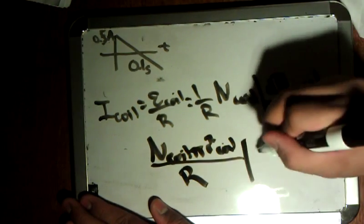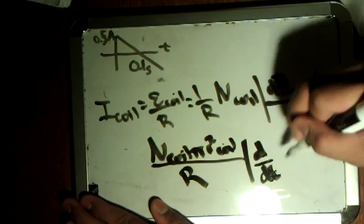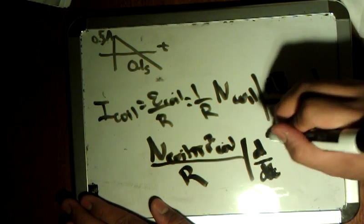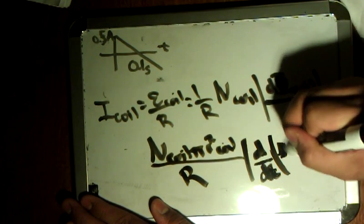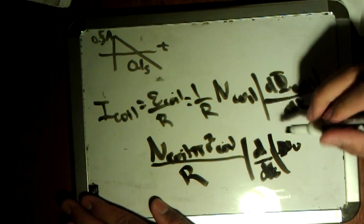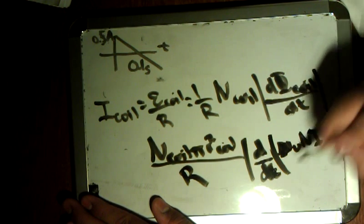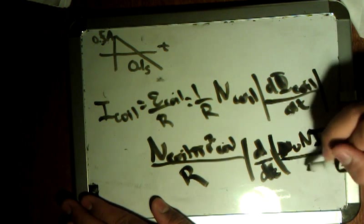And we have, in here, change in time of the magnetic field, which is mu nought, number of turns there, current over length.